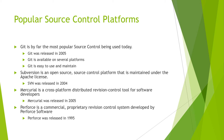Here are four popular source control platforms. The first is Git — by far the most popular source control platform today, released in 2005, available on several platforms, and easy to use and maintain. Next is Subversion, an open source platform maintained under the Apache license, released in 2004. Then there's Mercurial, a cross-platform distributed revision control tool for software developers, also released in 2005. And the last one, around the longest, is Perforce — a commercial proprietary revision control system developed by Perforce Software, released in 1995.